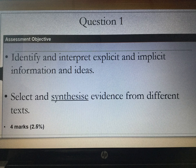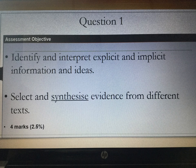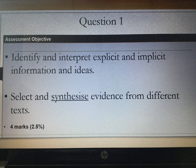If you're worried about what those words mean: explicit means something that is very clear and obvious in the text, whereas implicit is the opposite — it's something that is perhaps hidden or embedded in the text and isn't quite as clear or obvious. It might be something very indirect or hidden. Secondly, you need to select and synthesise evidence from the text — you need actual evidence from the text in your answer, not things you've made up.